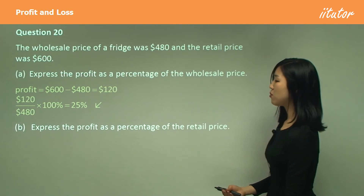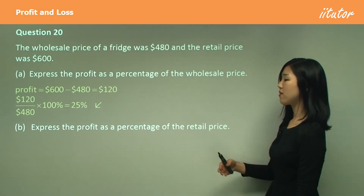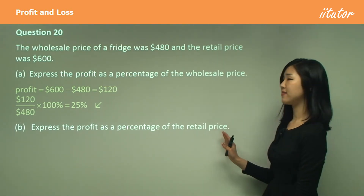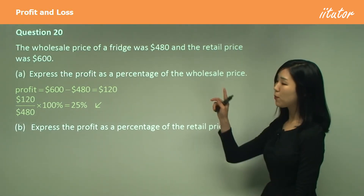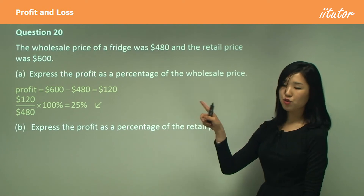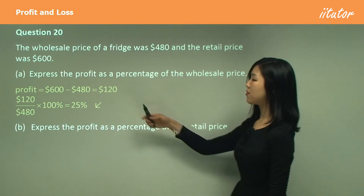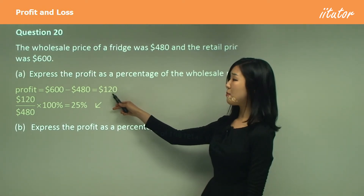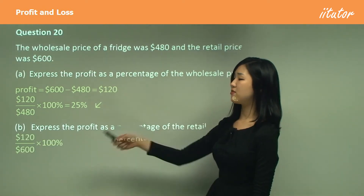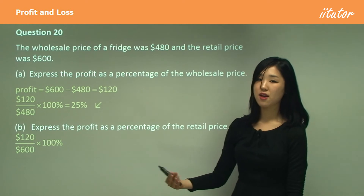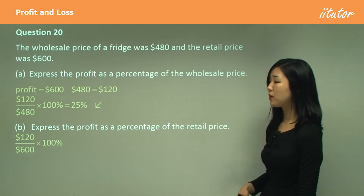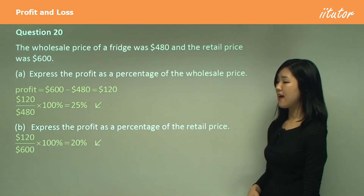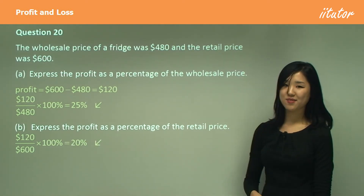Now for part B, we want to express the profit as a percentage of the retail price. The retail price is $600. We use the same profit of $120, but this time out of $600: 120 over 600 times 100 to get the percentage.